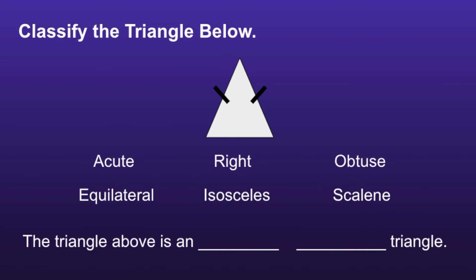Now we want to classify the triangle below based off of angles and side lengths. If we look at the angles in this triangle, we can see that all of the angles are less than 90 degrees. This would make this an acute triangle.